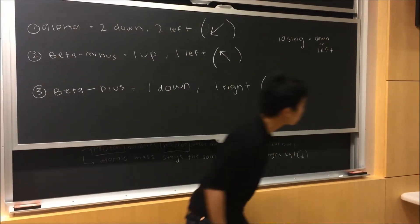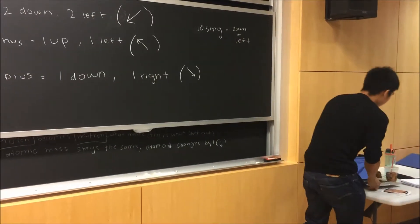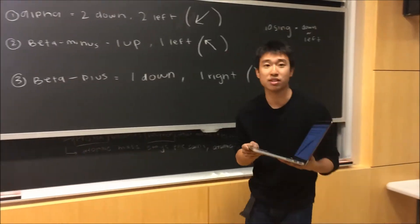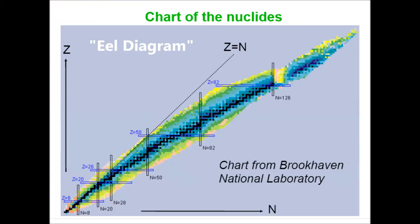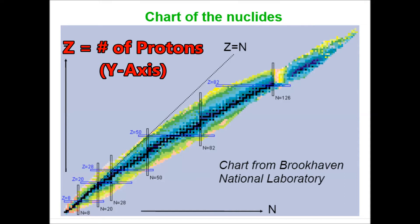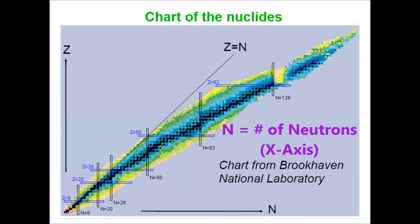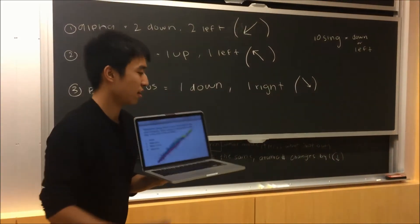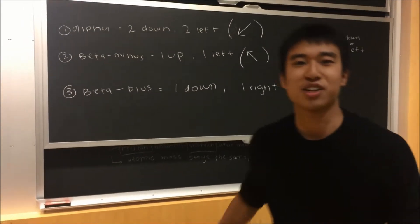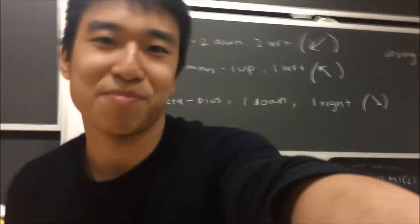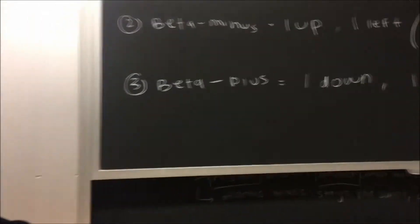So today we're going to talk about radioactive decay — alpha decay, beta plus, beta minus decay, and the yield diagram. I am going to hand it over to Ali and Raha, who are both in Professor Duffy's section for Py106, Physics 2.